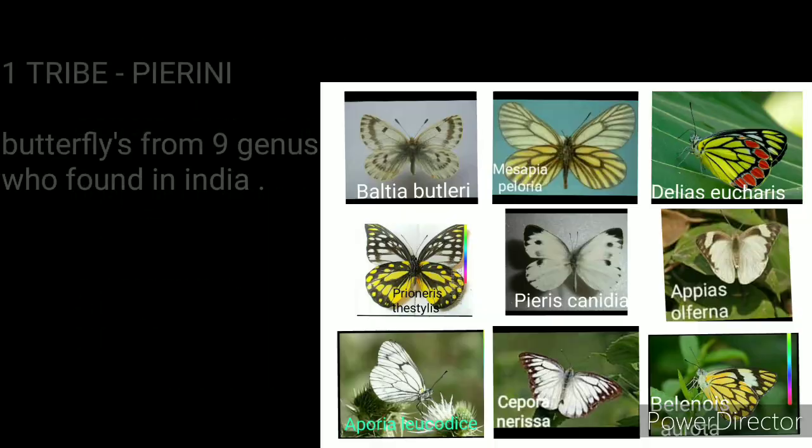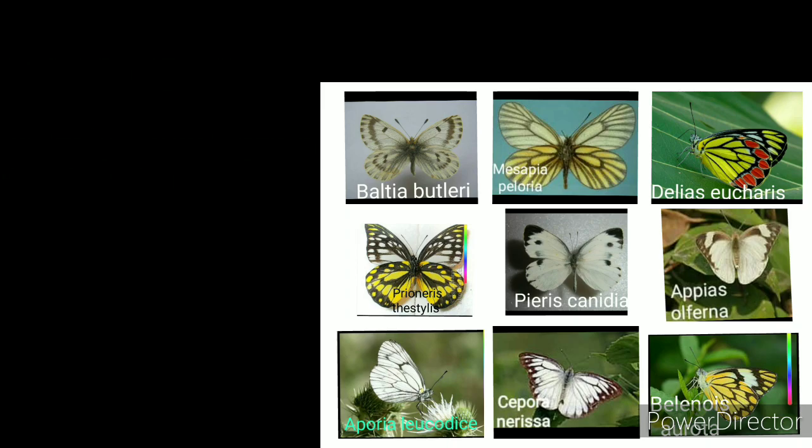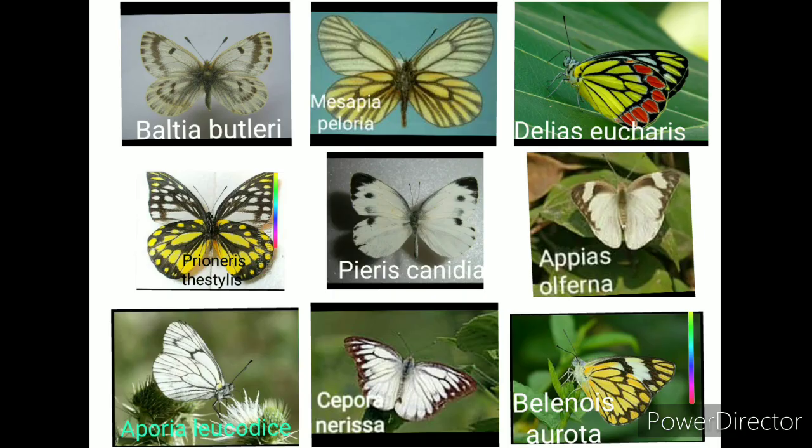I am showing you nine genera of butterflies from the first tribe, Pierini, found in India. Other than these, two more genera are found in India.